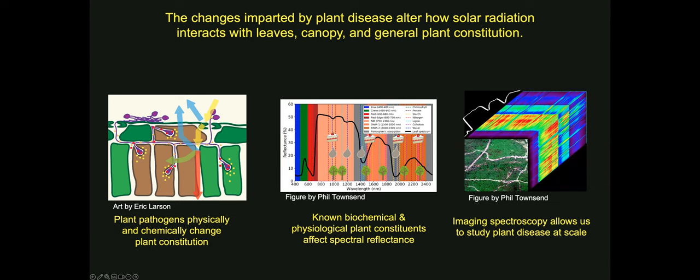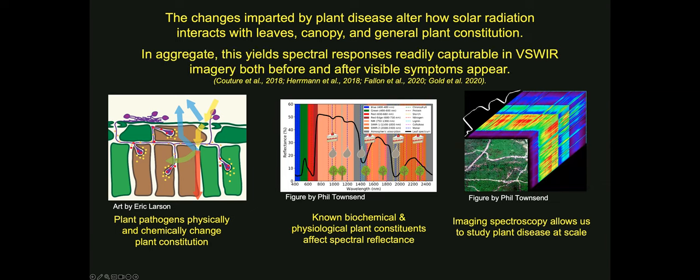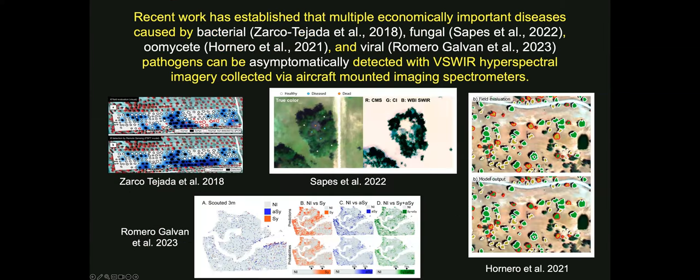In aggregate, this yields spectral responses that are readily capturable in hyperspectral imagery both before and after visible symptoms appear — this is now a well-established fact. Recent work has established that multiple economically important diseases, such as those caused by bacteria, fungal, oomycete, and viral pathogens, including grapevine leaf roll virus, can be both asymptomatically and symptomatically detected using full-spectrum hyperspectral imagery collected via aircraft-mounted imaging spectrometers.